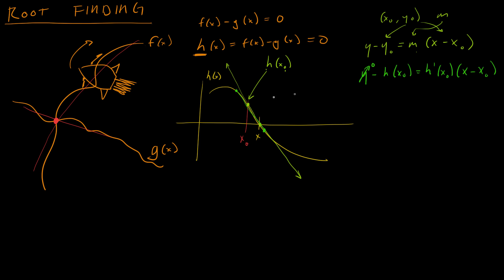So if I do solve for x, this is what I'm going to get. I'm going to get x equals x naught minus h(x naught) over h prime(x naught).